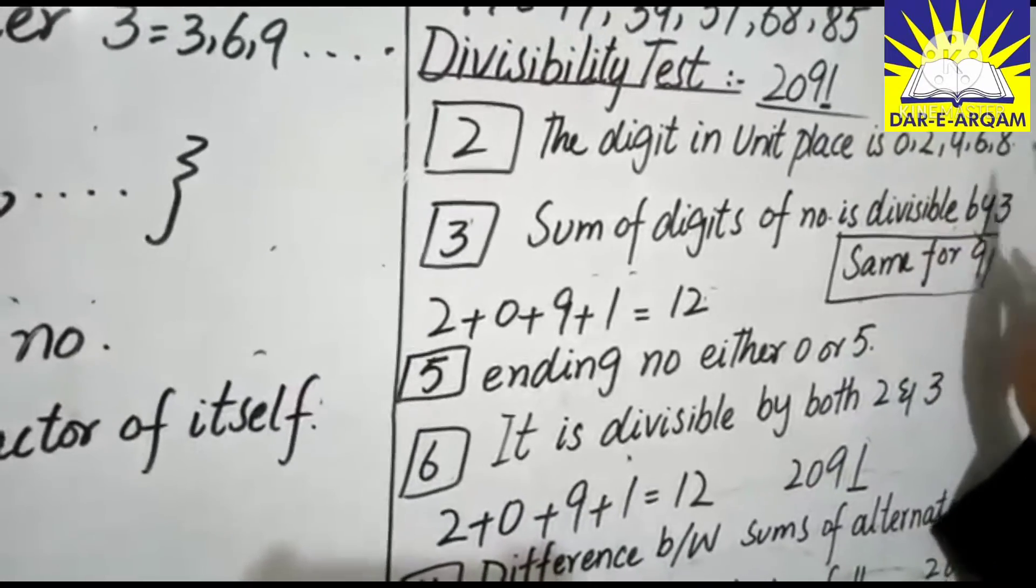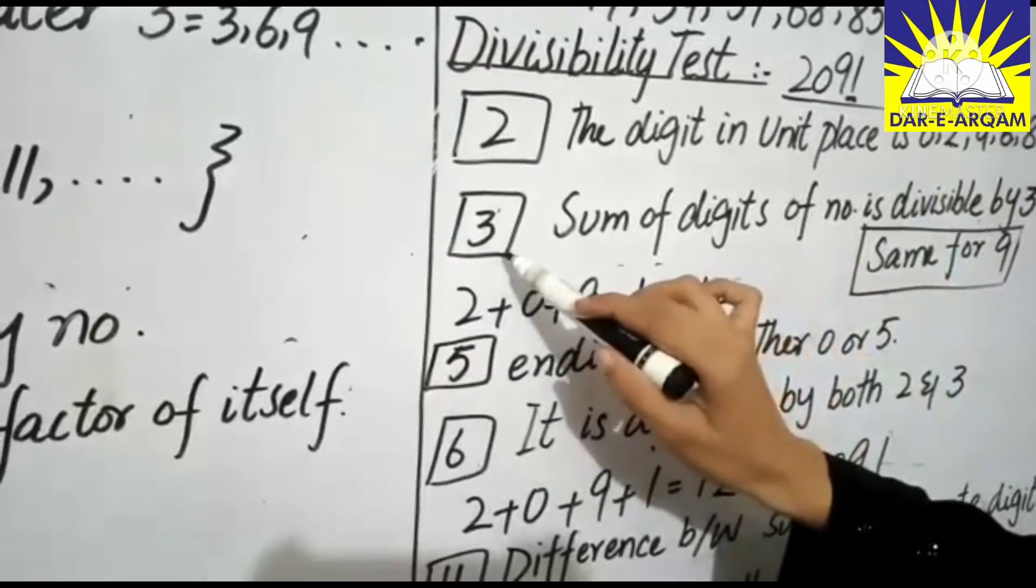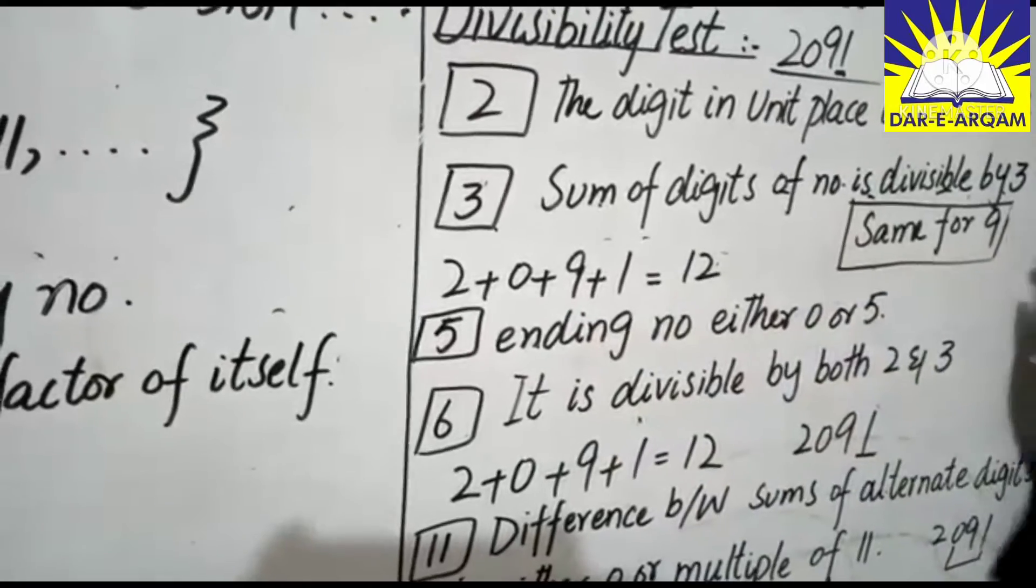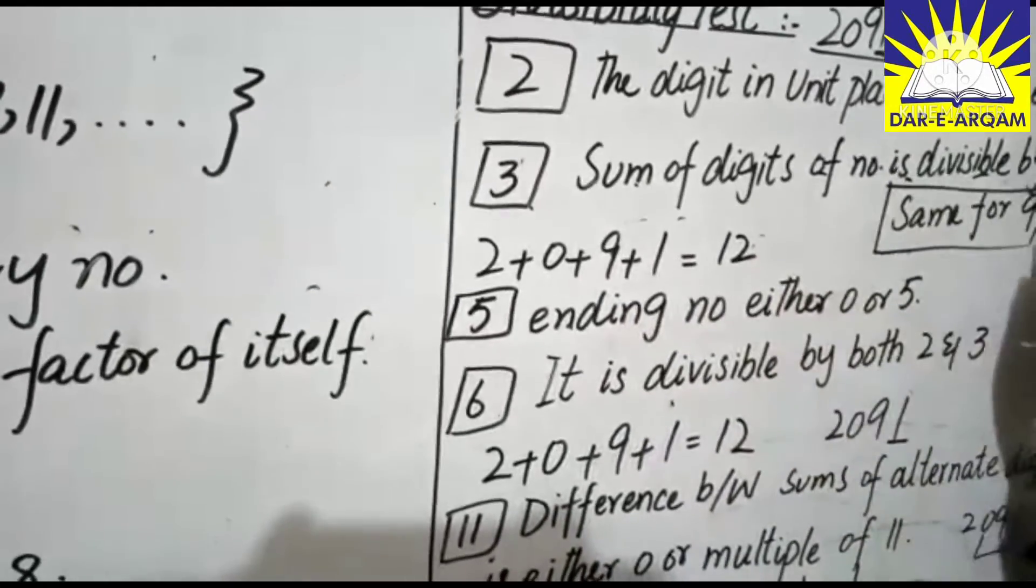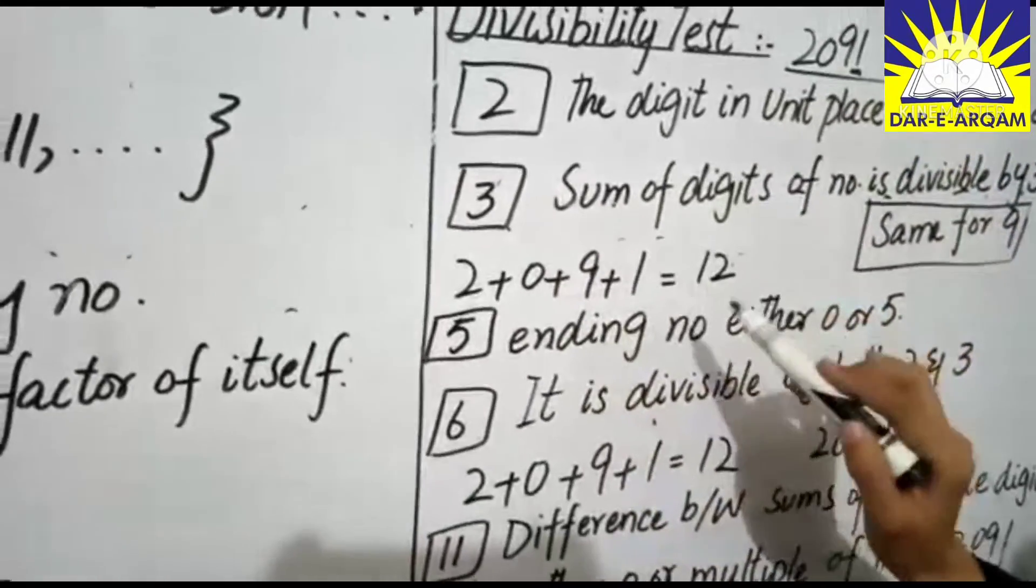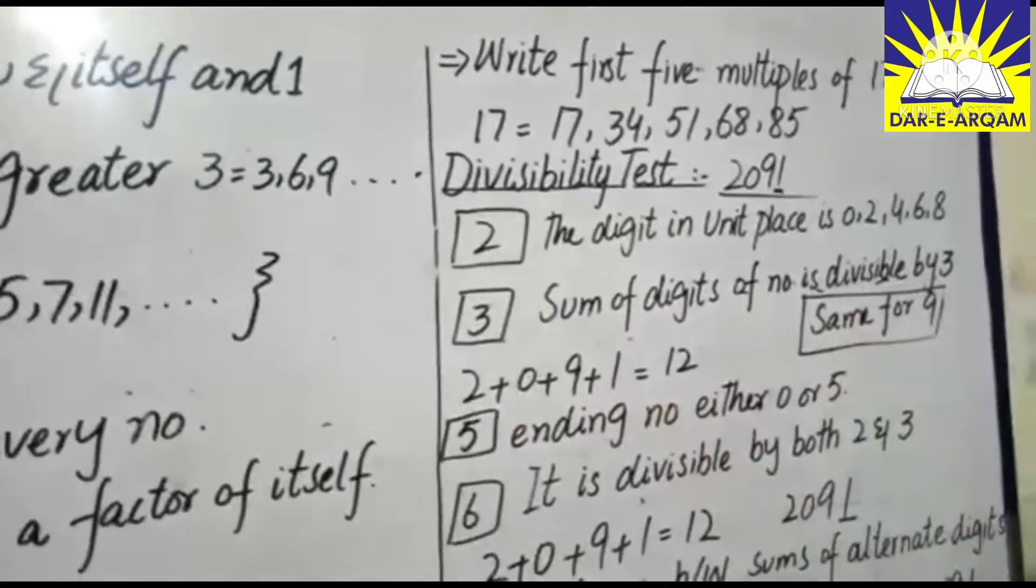Next, 3 is divisibility. If you check the sum of the digits of number is divisible by 3. If we add 2, 0, 9, 1, then we get 12. 12 is divisible by 3, 3 times 4 equals 12.